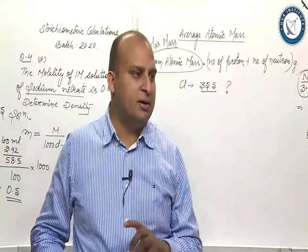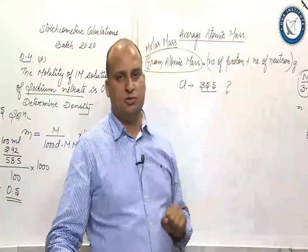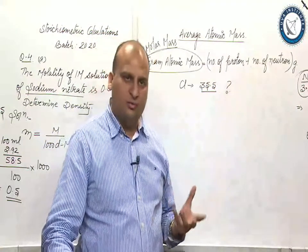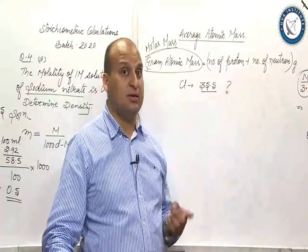When you say mass number, it is a number wherein you are talking about number of protons and number of neutrons. To get the molar mass, just add g after mass number.